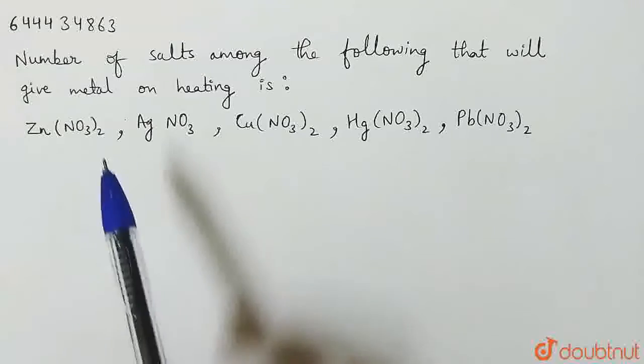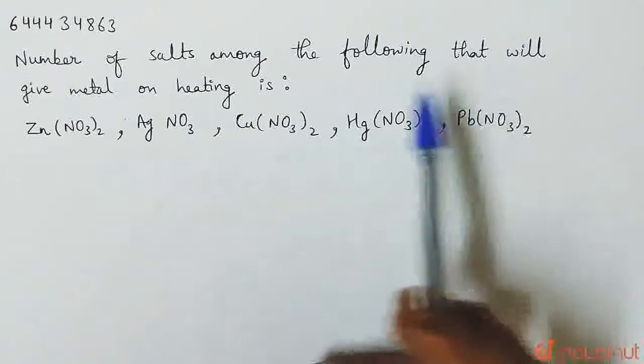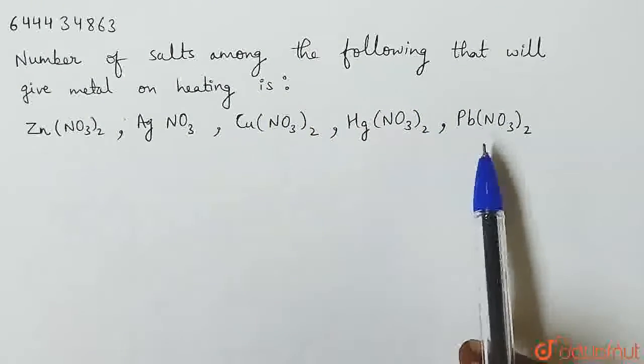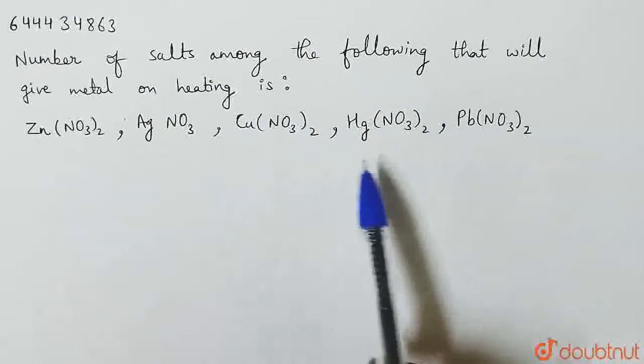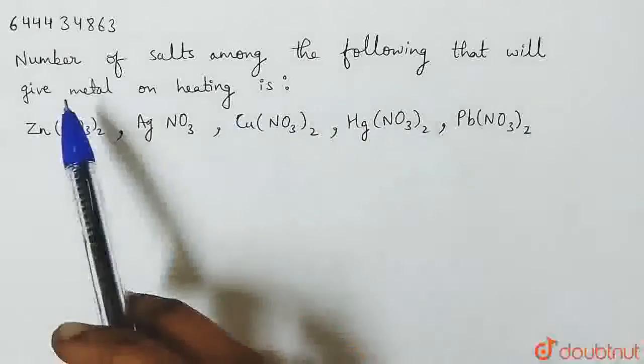The question is: number of salts among the following that will give metal on heating is? We have some salts given. We have to tell which salts will give metal.